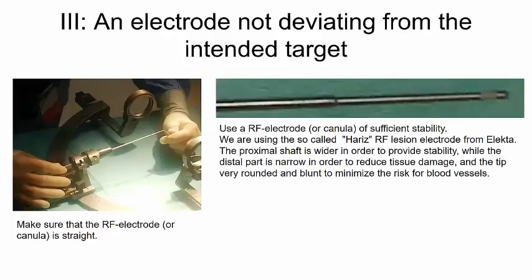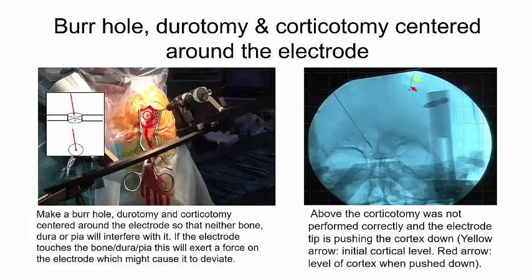We of course need an electrode not deviating from the intended target. We are using radiofrequency electrode to make a channel for the permanent DBS electrode. And we need to have one of sufficient stability. We are using the so-called Harris radiofrequency lesion electrode from Elekta. The proximal shaft is wider in order to provide stability, while the distal part is narrow in order to reduce tissue damage. And the tip is very rounded and blunt to minimize the risk for blood vessels.